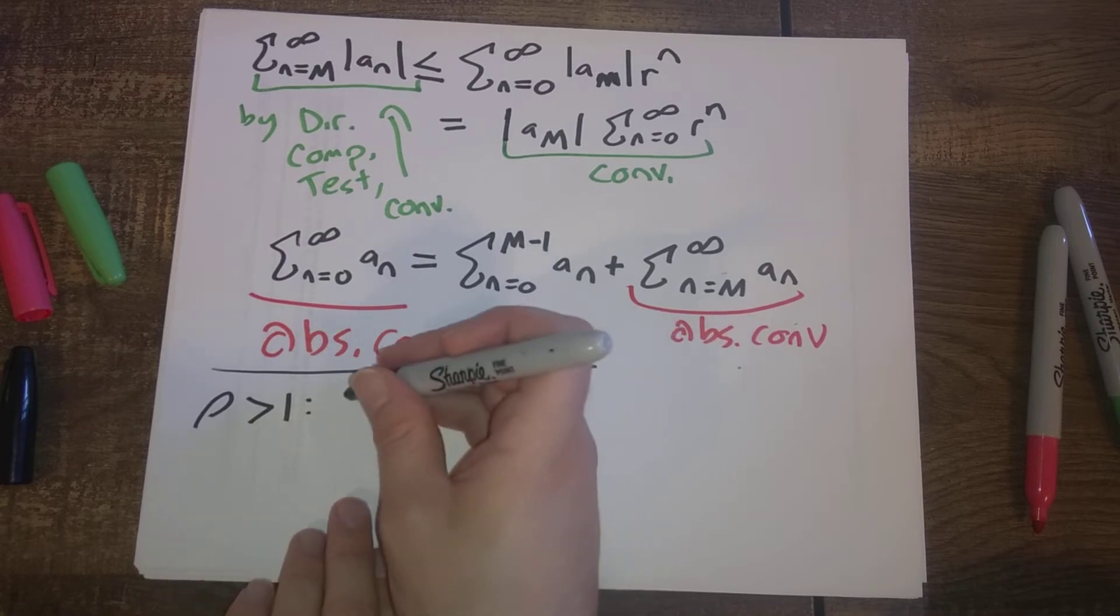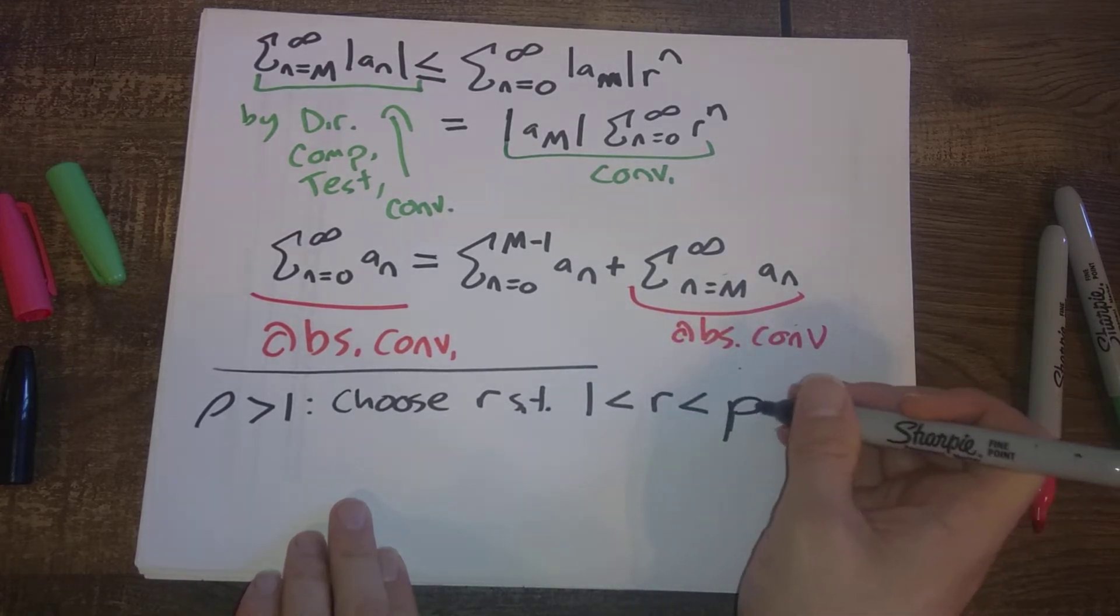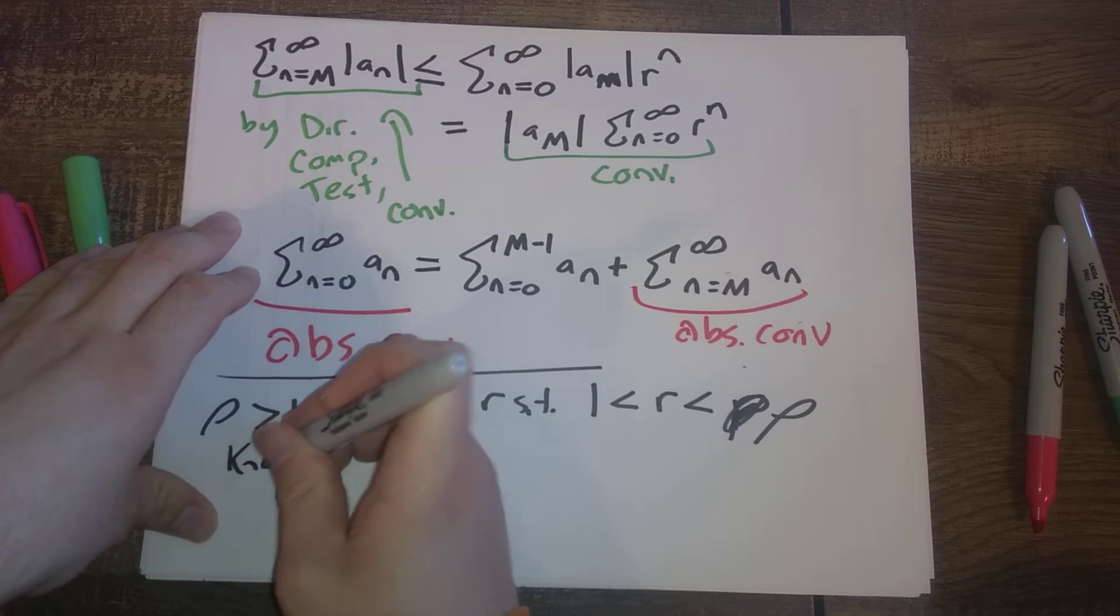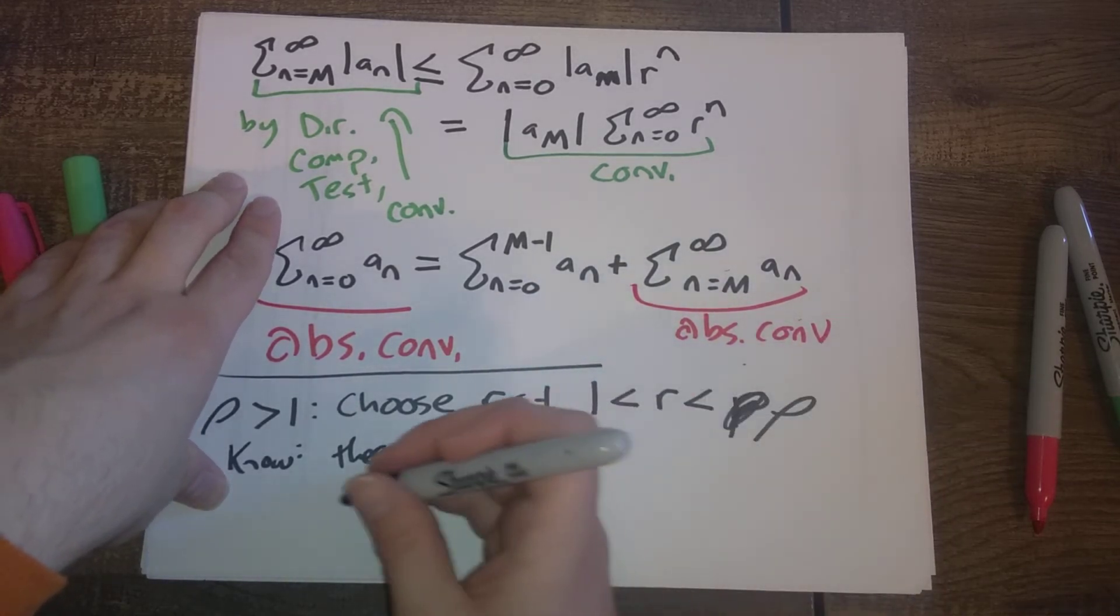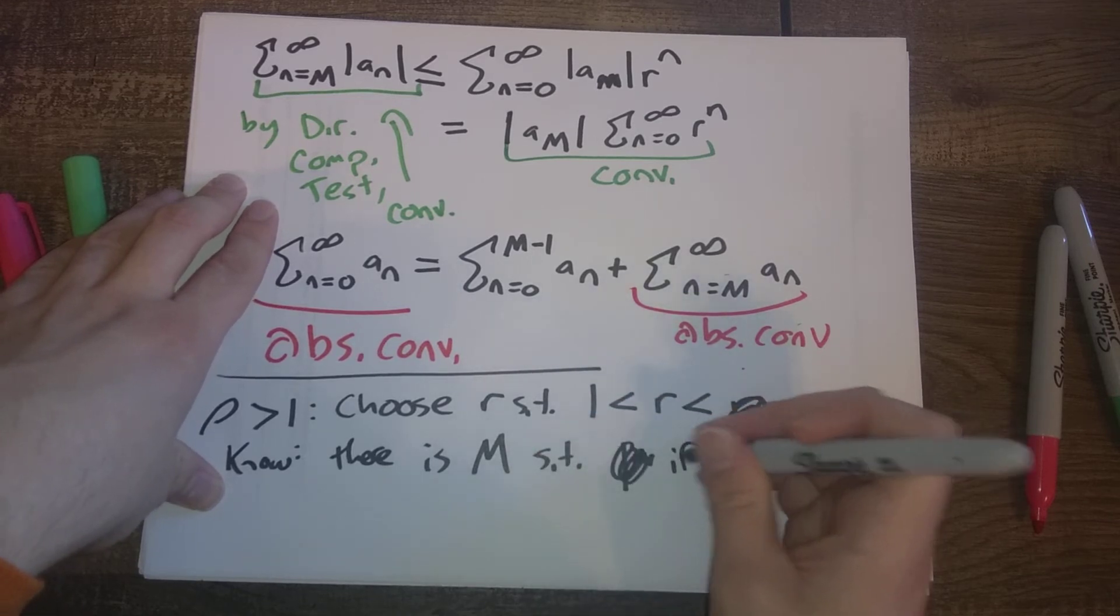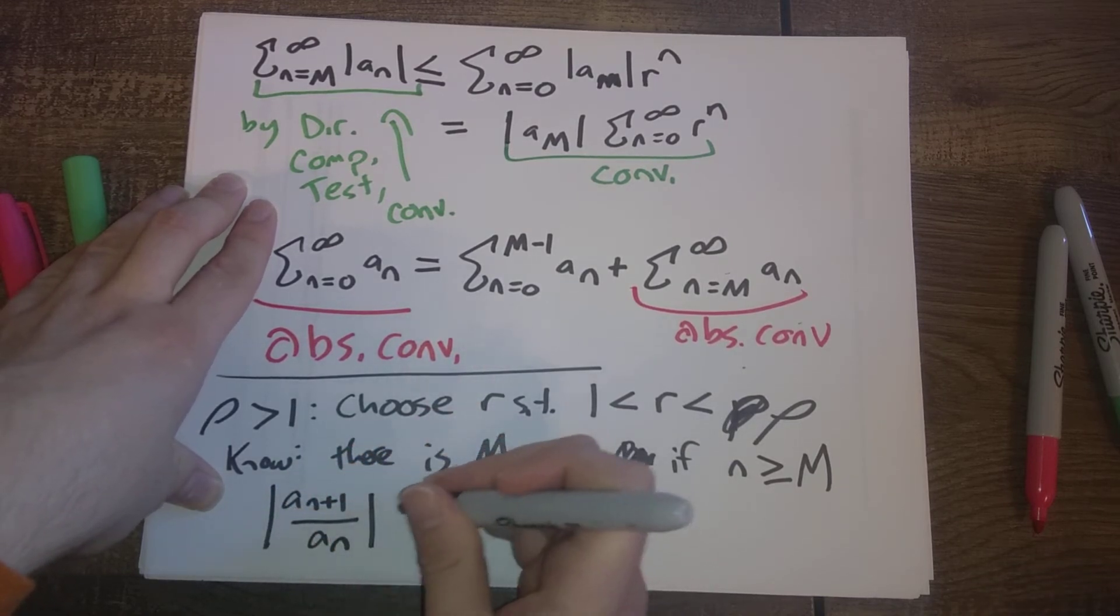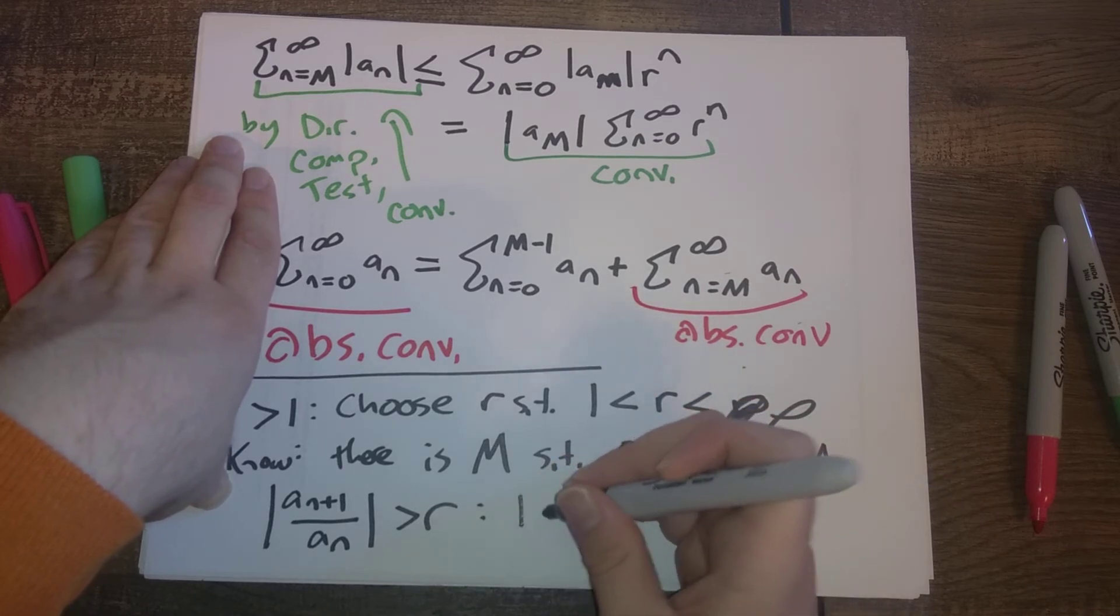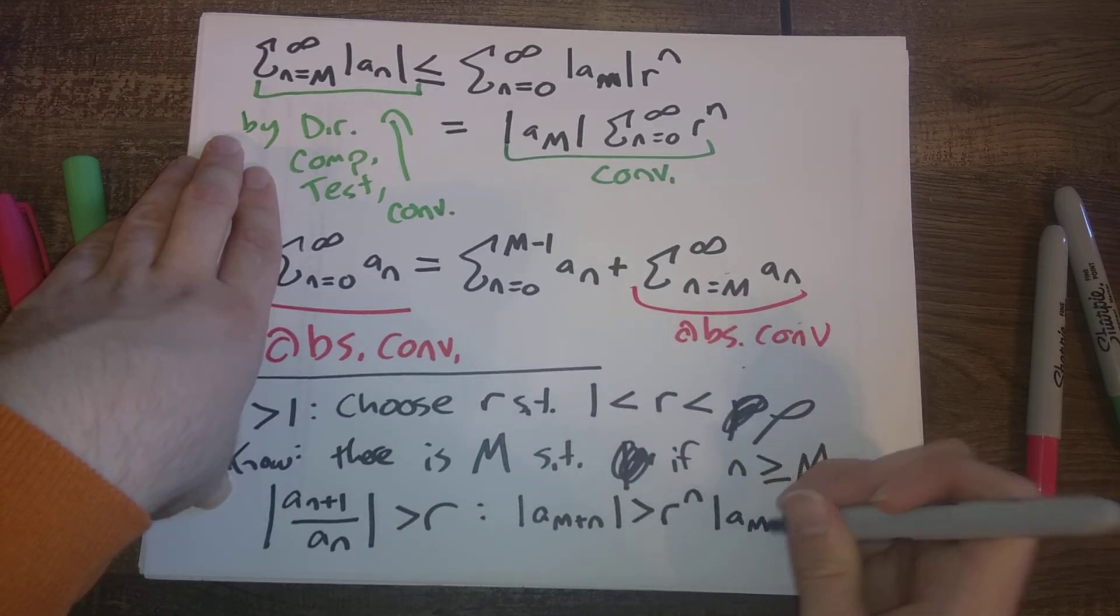So now we're going to do a similar trick. We're going to choose R such that R is still between 1 and ρ. But now ρ is bigger than 1, so R is going to be bigger than 1 as well. By a similar argument, we know there is some kind of value big M such that if little n is bigger than big M, the absolute value of a_{n+1} divided by a_n is bigger than R. And so by similar calculations as before, we end up with a_{M+n} is strictly bigger than R to the n times a_M.